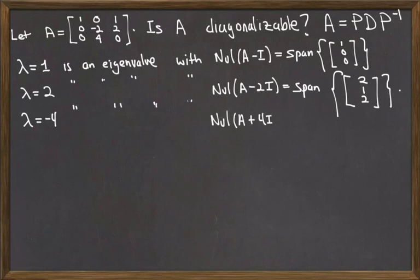Finally, lambda equal to minus 4 was an eigenvalue, and its eigenspace, the null space of A plus 4I, is spanned by the vector [1, 5, -5].